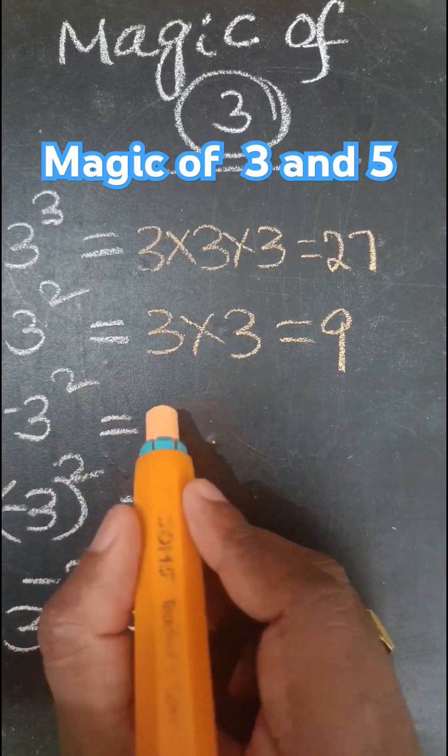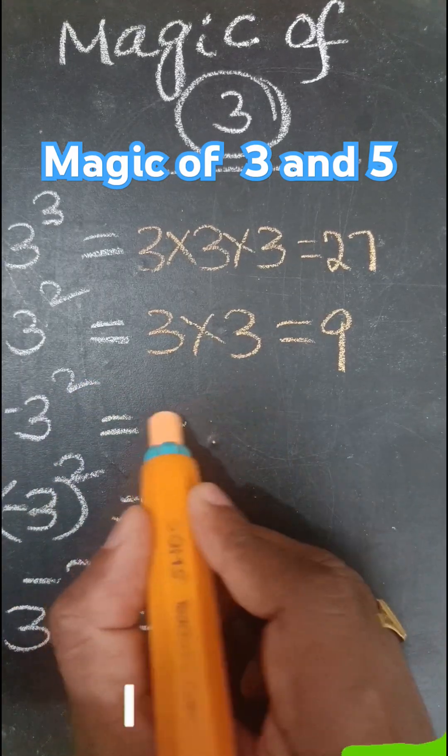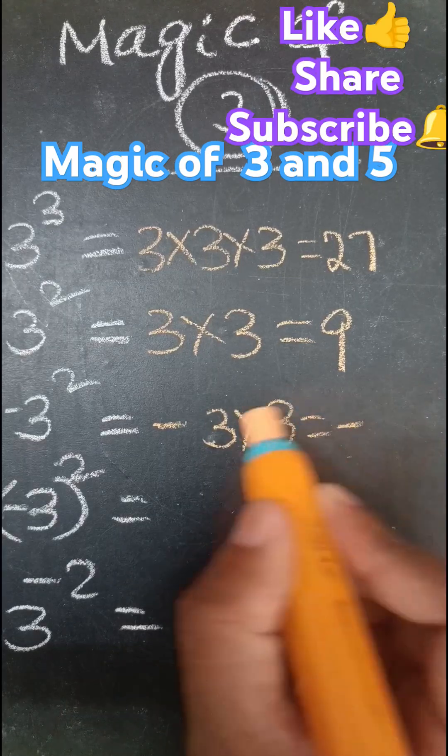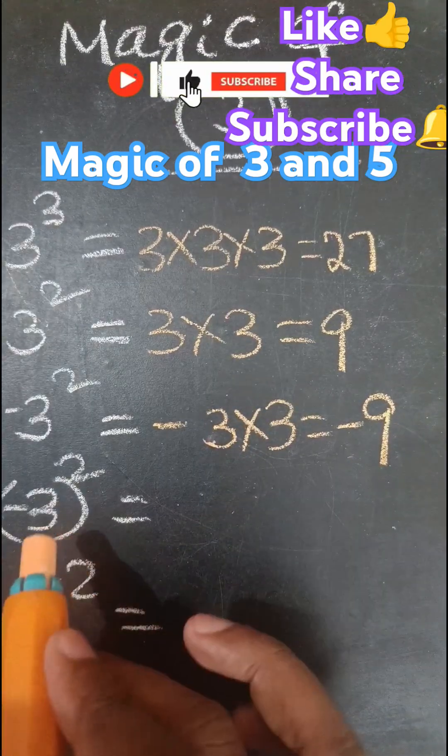Next, minus 3 whole square. Minus 3 into 3, minus 3, 3 is 9.